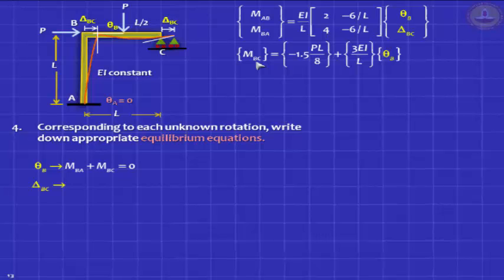You have to give me 1 more equation corresponding to the unknown delta BC. What is that? M CB equal to 0? No, no, no. That is corresponding to theta C. M CB equal to 0, we have already taken advantage of reducing the indeterminacy and ignoring theta C. That is all out. M AB equal to 0? No. M AB is not 0. How can it be? M AB is a fixed end. There you will have a moment. M AB is 2 EI by L into theta B minus 6 EI by L square into delta BC. How is it 0? No.